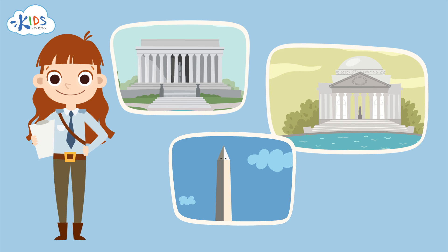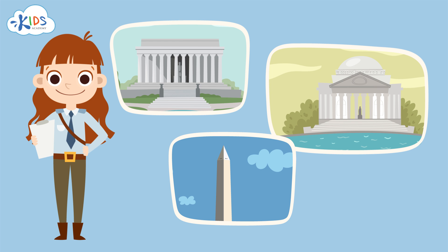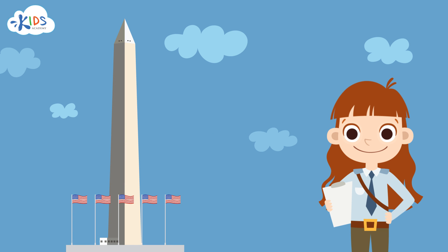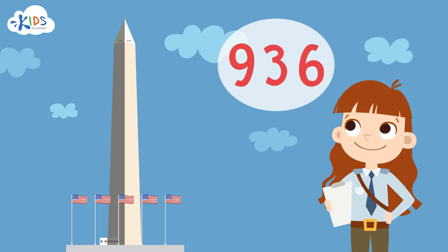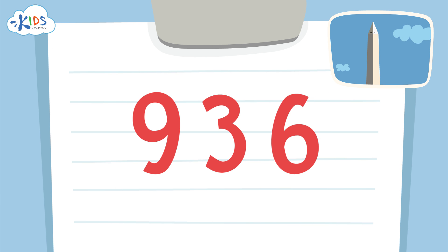Let's take a look at a real-life situation. This park ranger wants to record how many people visited these landmarks by rounding to the nearest hundred. Let's help her by rounding. First we'll check out the Washington Monument — one of my favorite landmarks. According to the data, 936 people have visited the Washington Monument. Now let's round this number to the nearest hundred using the strategy of underlining the hundreds place and drawing an arrow to the tens place.